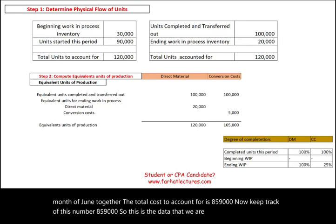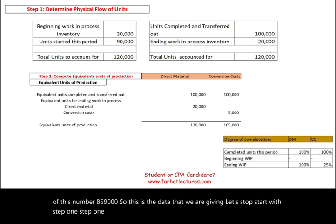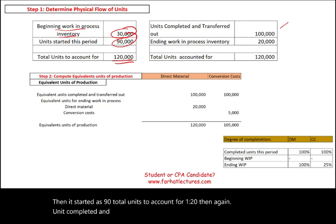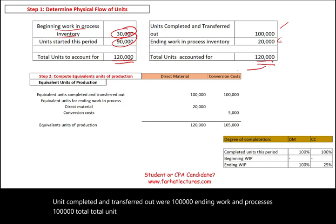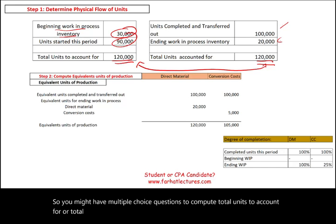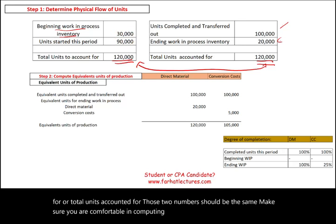Step one — determine the physical flow of units: beginning work in process was 30,000 units, units started were 90,000, total units to account for is 120,000. Units completed and transferred out were 100,000, ending work in process is 20,000, total units accounted for is 120,000. These two totals must equal each other. This is a common multiple choice question area.